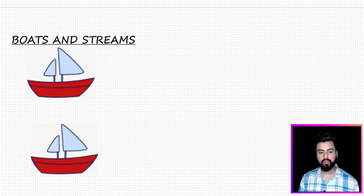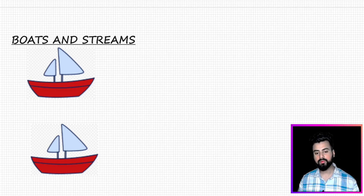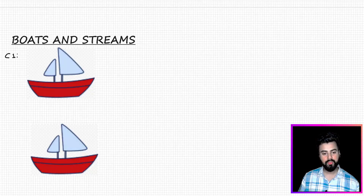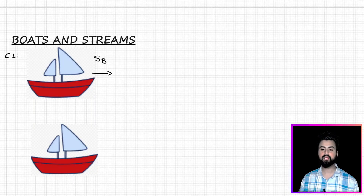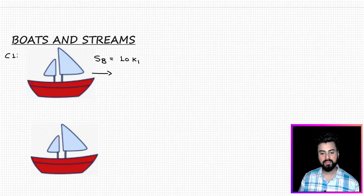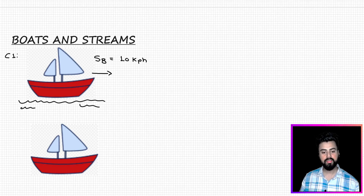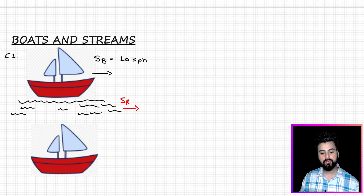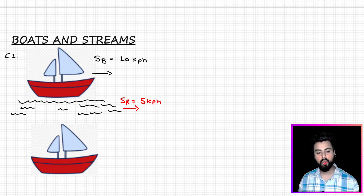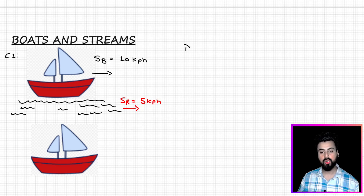Let us start our discussion on the important concept of boats and streams. I've shown two cases in front of you, so let us discuss them one by one. In case 1, there is a boat flowing in a particular direction with speed Sb — the speed of the boat — let's say 10 km/h. The river (stream) is also flowing in the same direction with speed Sv, say 5 km/h. Since both boat and river are flowing in the same direction, this type of movement is called downstream movement.